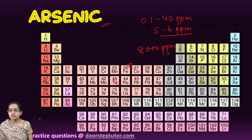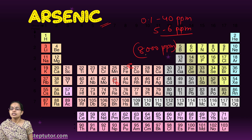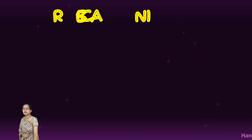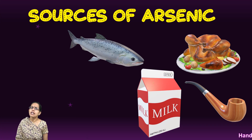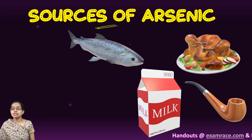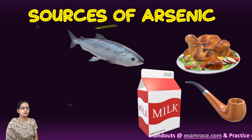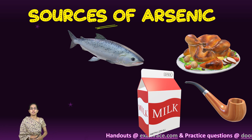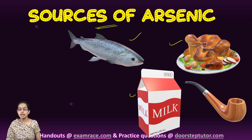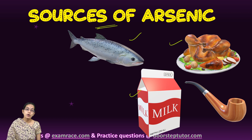With such high concentrations present in the soil, arsenic has become detrimental to human health. Arsenic is found in most dietary sources — fish, meat, poultry, milk, and dairy products.